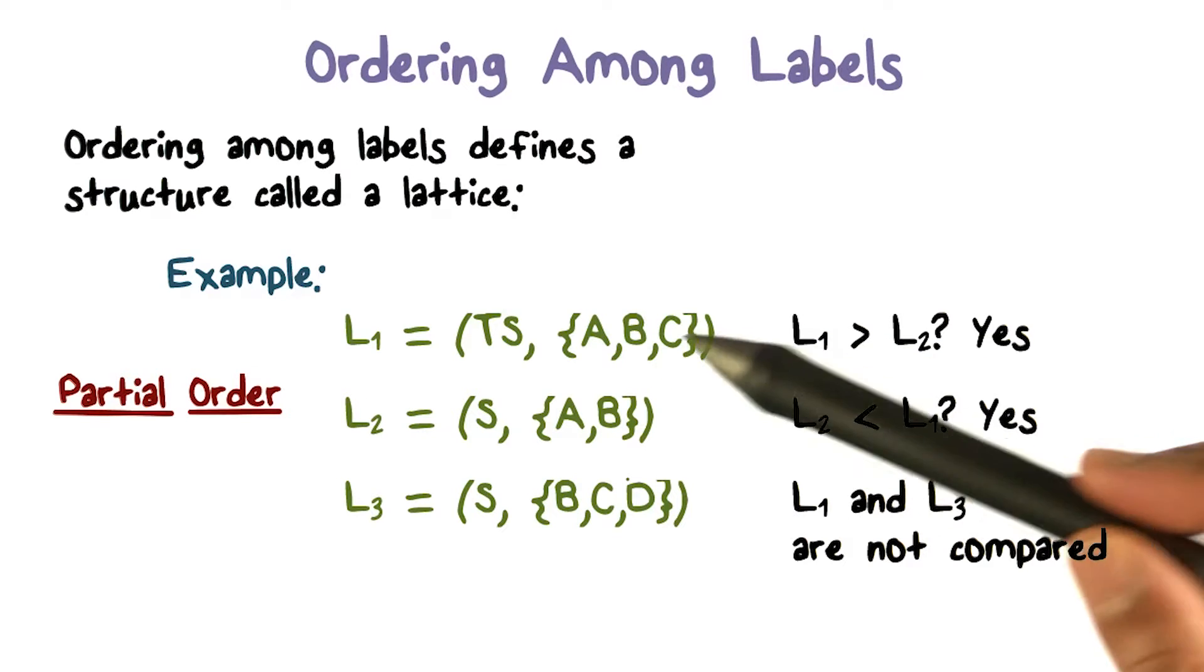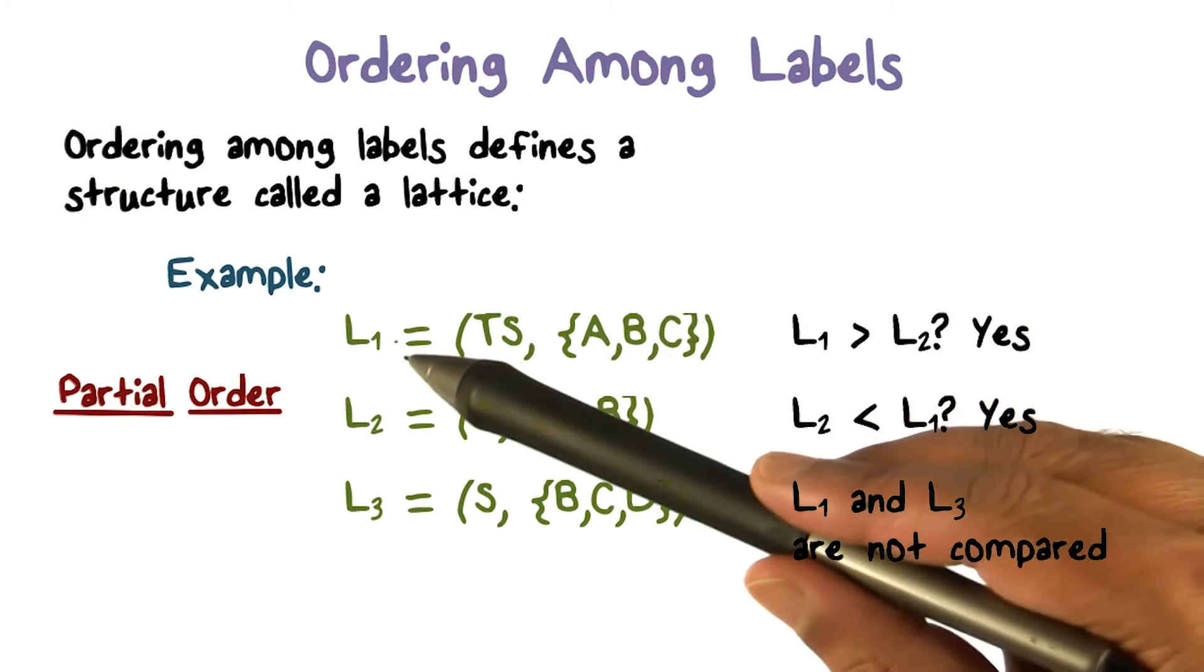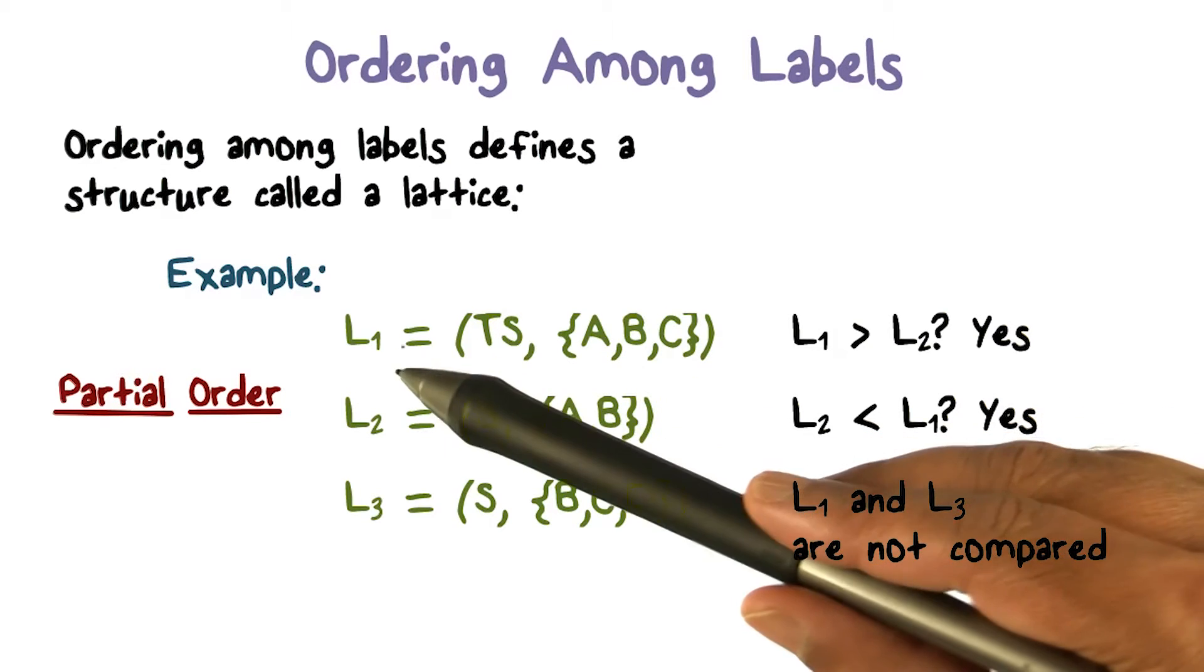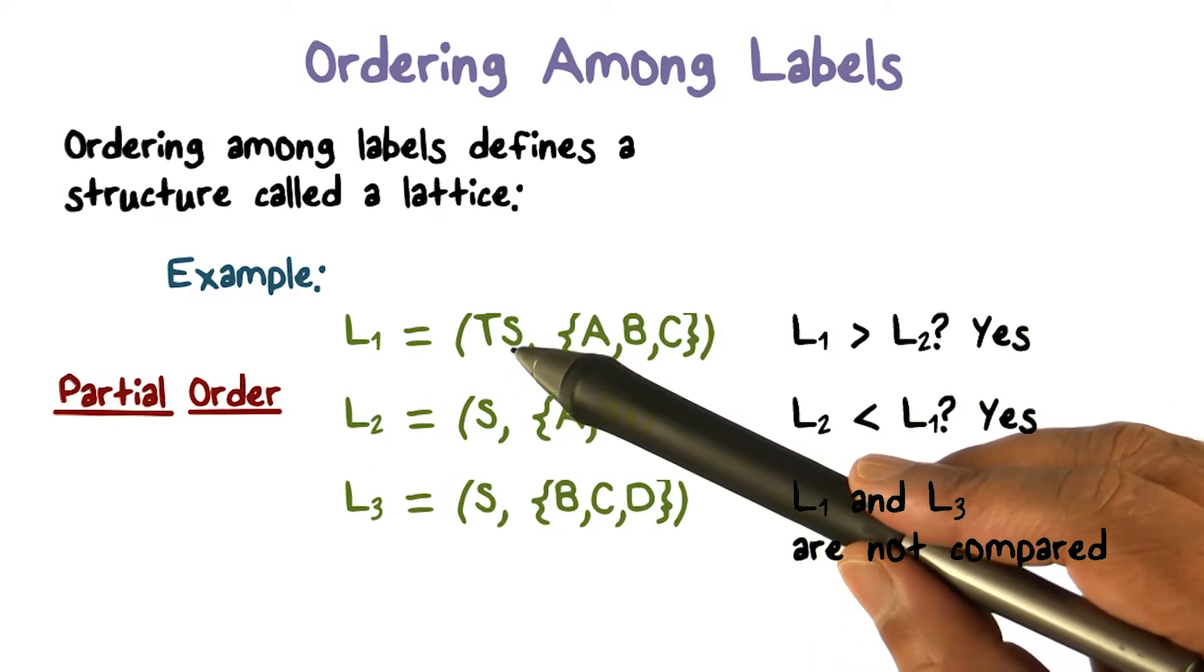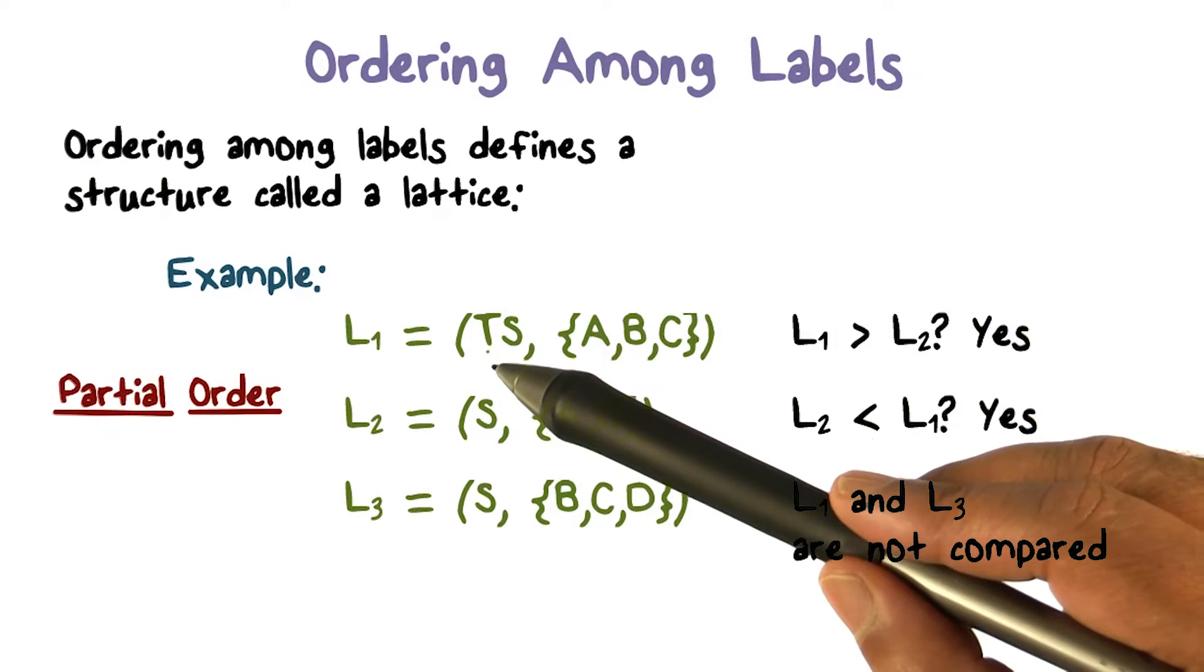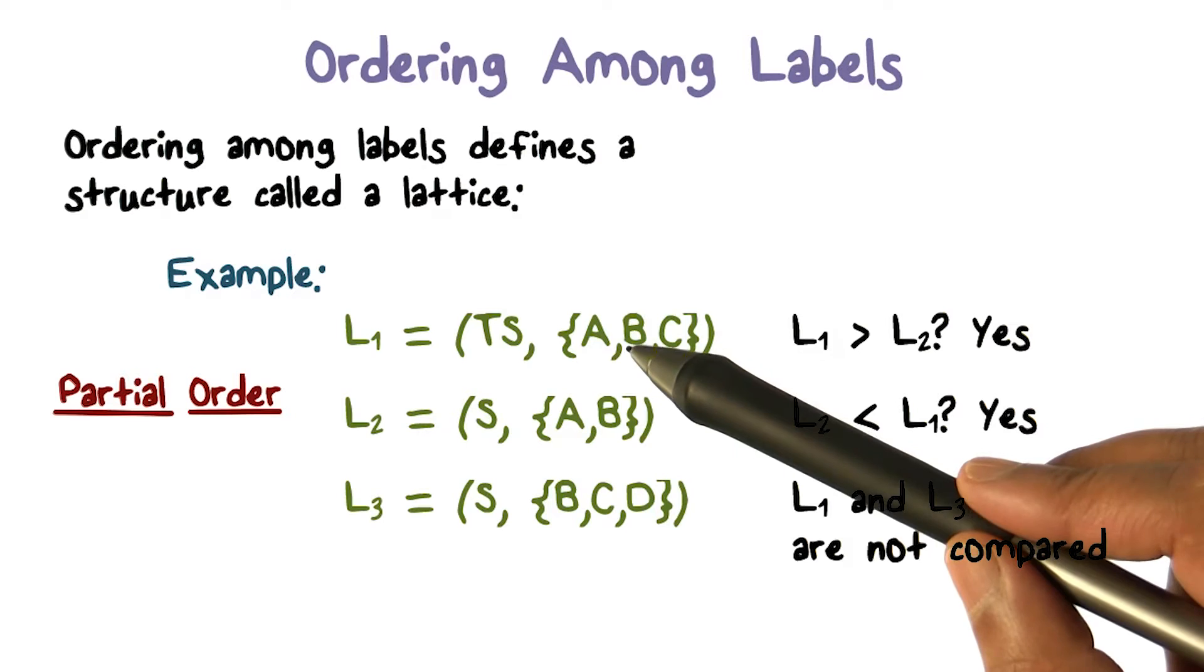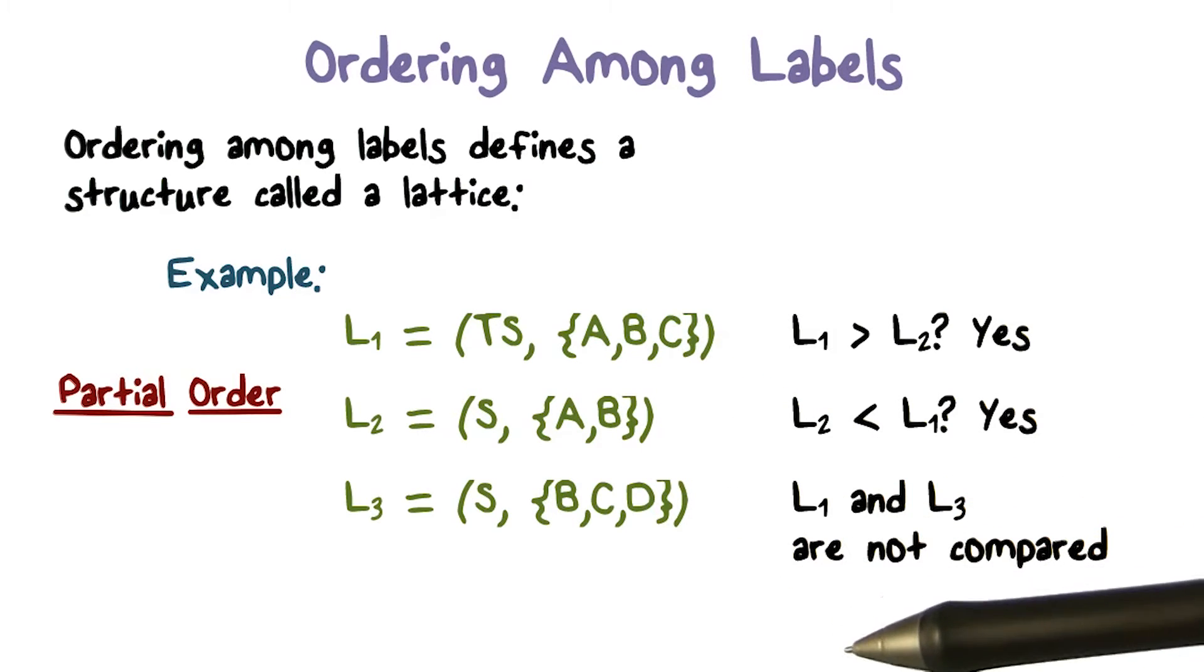So does L1 dominate L2? TS dominates S, and ABC contains AB. So we said that for L1 to dominate L2, the sensitivity level has to be greater, which is the case, and its compartment has to contain the compartment of L2, which is the case. So this is a yes.